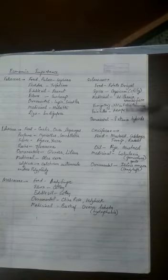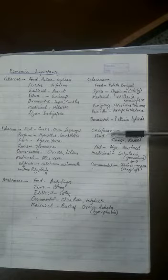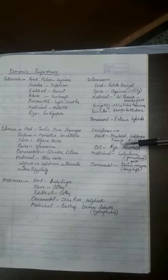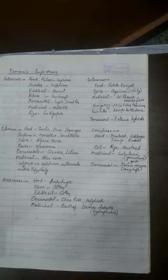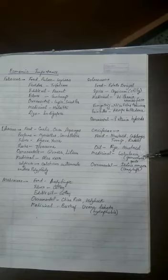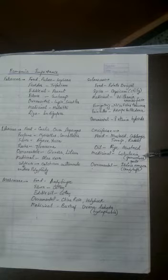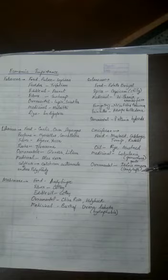The Cruciferae family provides us food — mustard, cabbage, turnip, and radish are all members. Oil-yielding plants include rye and mustard, especially black mustard, which is called Brassica nigrum. The medicinal plant Lobularia provides medicine against gonorrhea, which is a sexually transmitted disease.